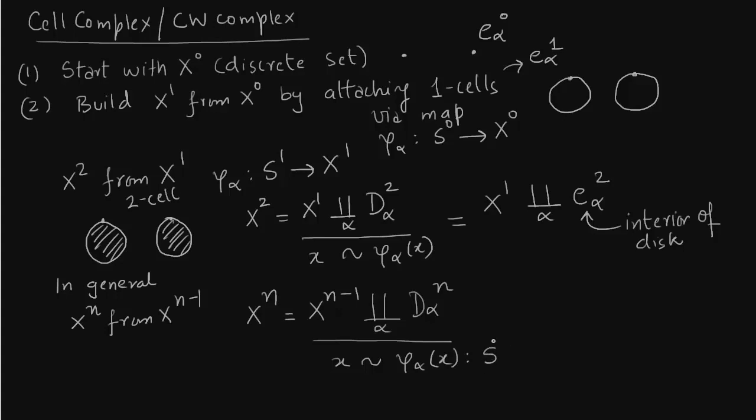So taking the boundary of the disk and attaching it to xn-1, this is the general procedure. Let me write this as the attachment map or the attaching map. And this, as from before, is nothing but the n-1 skeleton. And you take a disjoint union with the interior of the n cell.